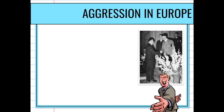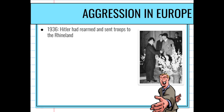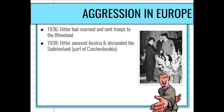Let's continue our discussion with the rise of dictators and looking at how aggression started to spread throughout Europe. By 1936 Hitler had rearmed the nation of Germany and started sending troops to an area known as the Rhineland. The Rhineland was a buffer area between Germany and France and had been set up that way after World War I.